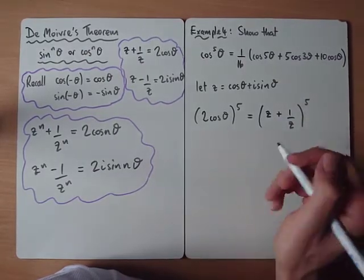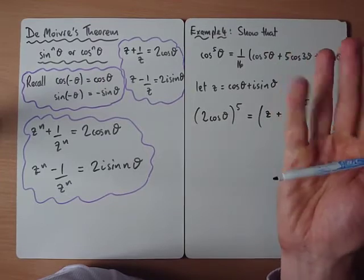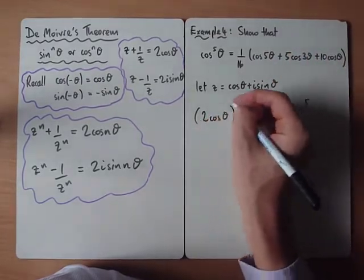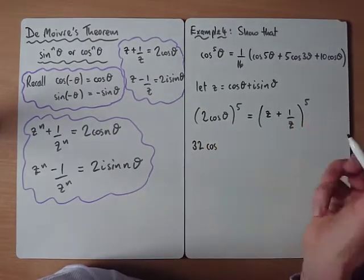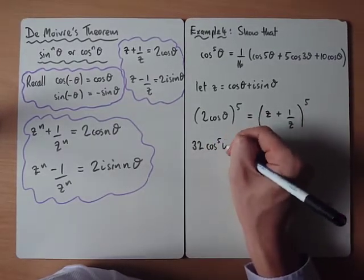So left-hand side, really straightforward. 2, 4, 8, 16, 32. So we could write that as 32 cos to the power of 5.